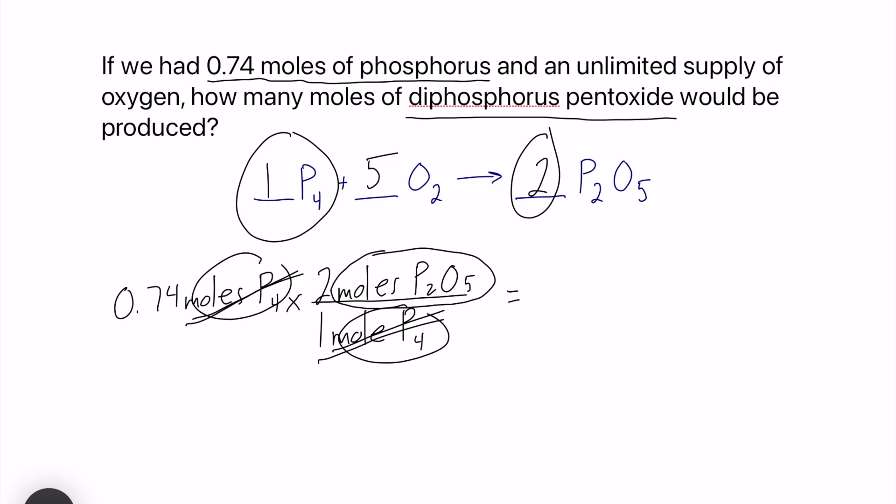All we have to do now is type this into our calculator. We have 0.74 multiplied by 2 because it's on top. And if you want to, you can divide by this 1, but it's really not needed since it is a 1. What you should find is 1.48 moles of P2O5. But significant figures, we can take those into account. So we're going to round this to 1.5 moles of P2O5.